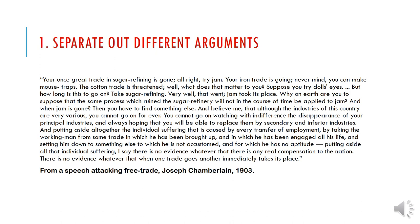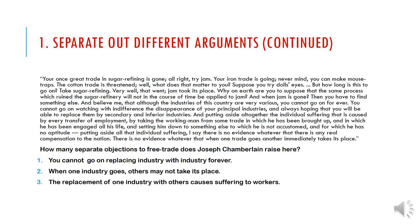In the real world, arguments are going to come at you very quickly, and it'll be up to us to identify the individual arguments. In this one paragraph, we can see that Chamberlain is making three different arguments: first, that you cannot go on replacing industry with industry forever; next, that when one industry goes, others may not take its place; and third, that the replacement of one industry with others causes suffering to workers. Each of these points is its own argument and requires premises of its own in order to prove it.